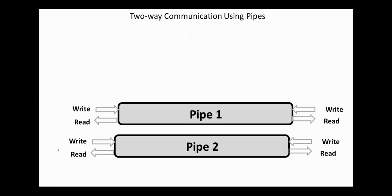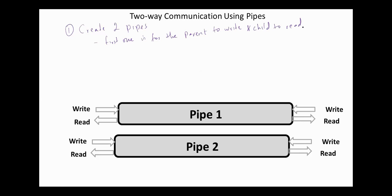A two-way communication pipe can be established as follows. First, create two pipes: pipe one is for the parent to write and child to read, and pipe two is for the child to write and the parent to read. The second step is to create a child process using fork().